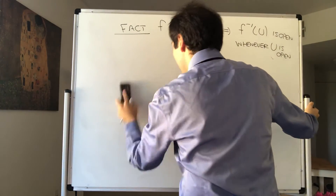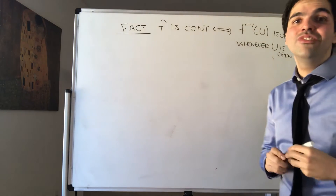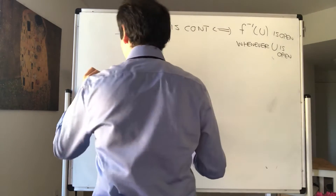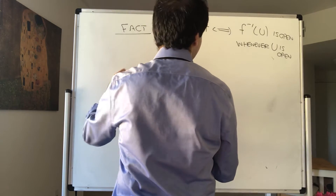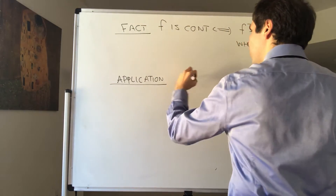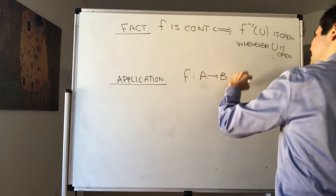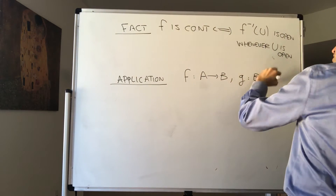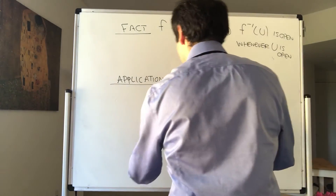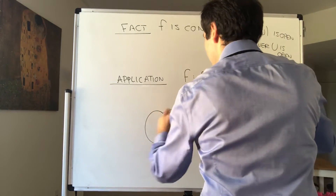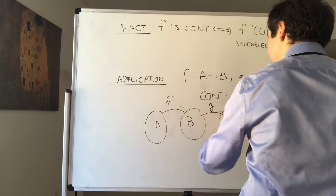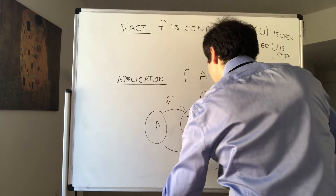Before I show this is equivalent to continuity in metric spaces, let me show you why this definition is awesome with a neat application. Suppose you have a function f from A to B, and g from B to C, and suppose they're both continuous. Let's show that the composition g composed with f is also continuous.